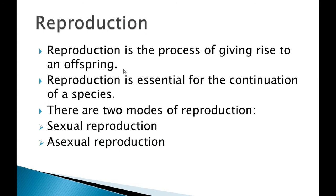What is the need of reproduction? So that a cat's species will not be finished, a dog's species will not be finished. Like all of you have seen that dinosaurs have been finished. If they had reproduced, they would not have been finished. So reproduction is essential for the continuation of a species. Species means variety.